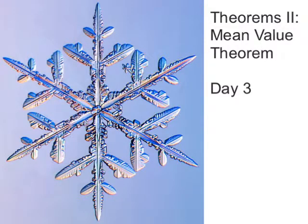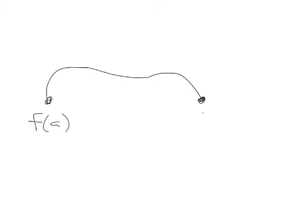Welcome to the video for the mean value theorem. This is day 3 of our theorem section 2 notes. In this video we're going to learn how to apply the mean value theorem. As you may recall in yesterday's notes we learned about Rolle's theorem, which said that if we have a continuous function, and f of a is equal to f of b, then somewhere within the interval of a to b, we would hit a point where the slope is 0. And that's Rolle's theorem.